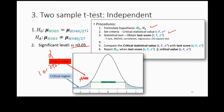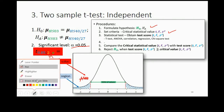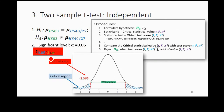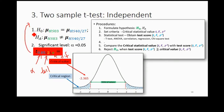To look for the critical value for the t-test, you need three things: alpha, whether it is one-tail or two-tail, and the degrees of freedom. Alpha is determined by your research question; the tail is also based on your research question; and the degrees of freedom depend on sample size. In this case you have two samples — sample 1 and sample 2 — so it's different from the one-sample test.